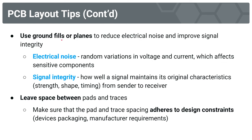Our next tip is to use ground fills or planes — they will help reduce electrical noise and improve signal integrity. Electrical noise is that random variation in voltage and current that affects sensitive components. You also need to consider signal integrity: how well a signal maintains its original characteristics — its strength, shape, and timing — from sender to receiver. If you're working with ICs that generate digital or analog signals, you want them to be reliable and accurate. Ground fills and planes reduce electrical noise and improve signal integrity.